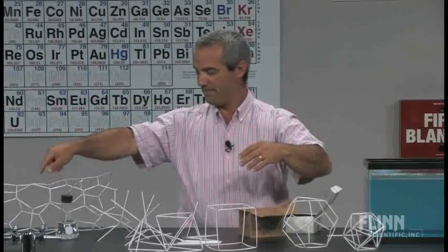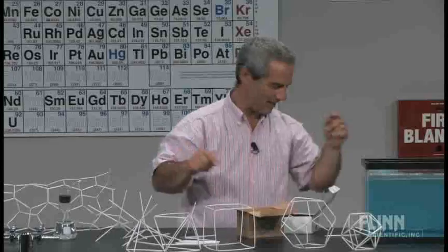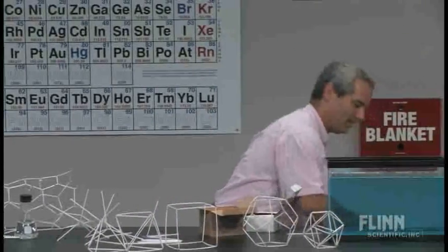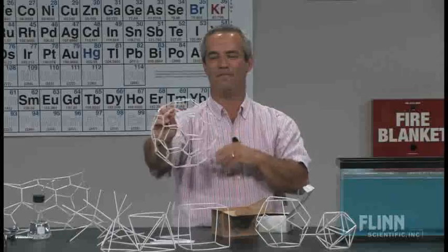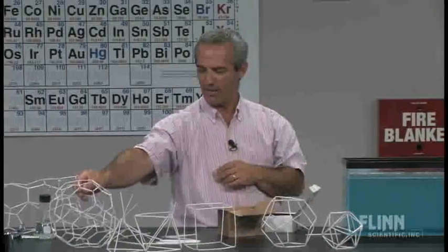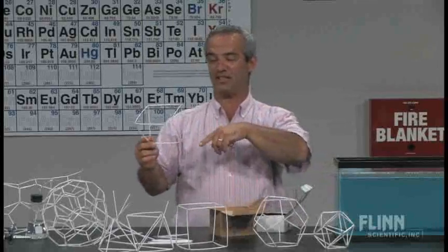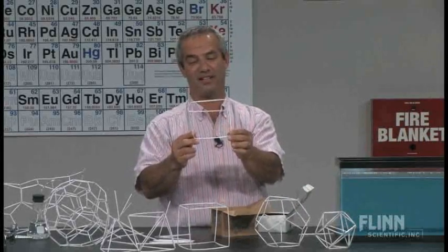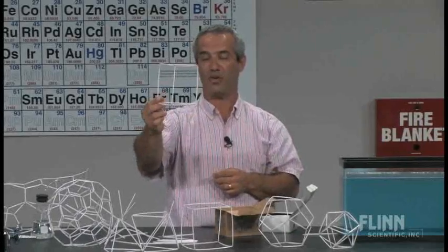And along those same lines, using just pentagons and hexagons, you can get the infamous buckyball, carbon-60. So lots of wonderful shapes here. This one doesn't match any of these other ones. This is an Archimedean solid. It doesn't have equal faces all around. It's got triangles and squares. It's just a triangular prism.